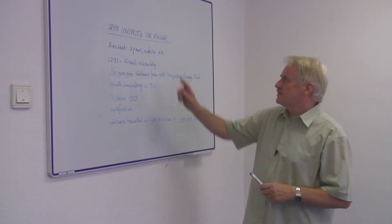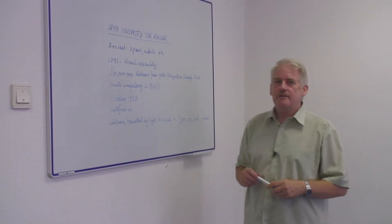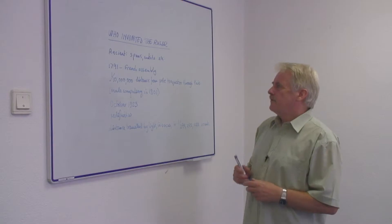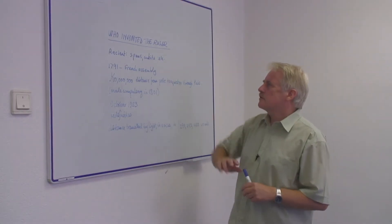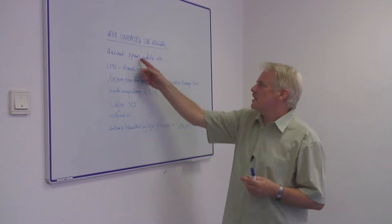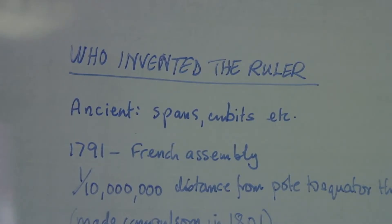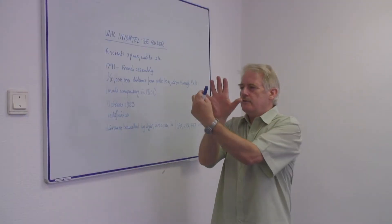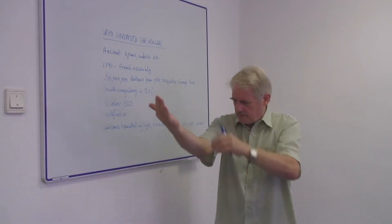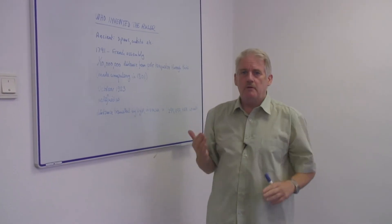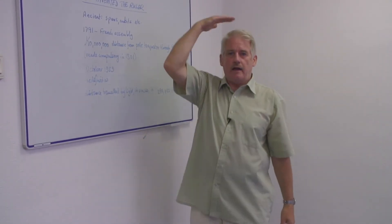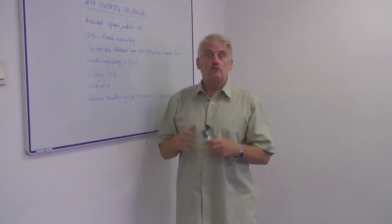Hi, I'm Steve Jones and I'm going to tell you who invented the ruler. Well, which ruler is the question. First of all, the ancients used all of the traditional things like spans and cubits — that is, the distance from this side of your thumb to that end of your finger, the length of the end of your fingers to the elbow, the length of your foot, the height of a man. These are all traditional rulers.